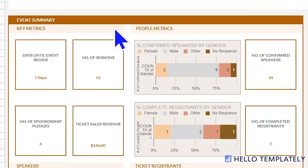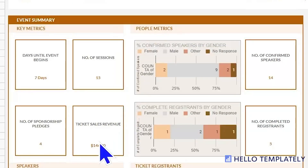The number of days until the event, so you know how much time you have to get everything done. Marketing information like the number of sessions you're going to have, the number of paid sponsors, and of course the revenue from ticket sales.